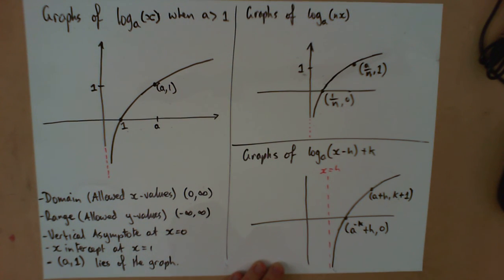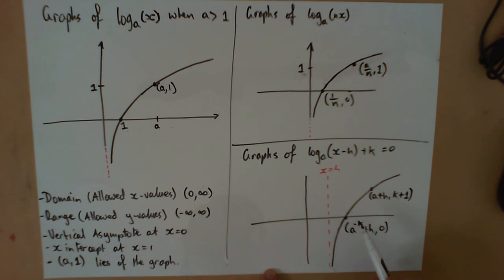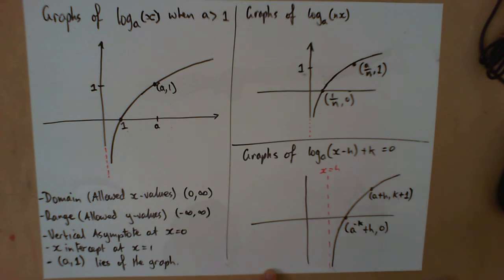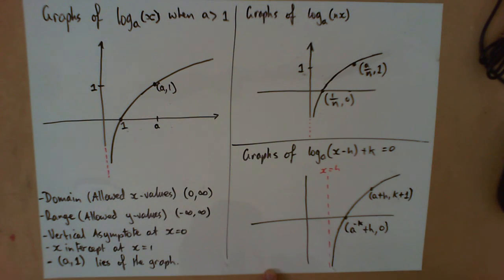The x-intercept is not quite as simple, but it's still doable. We find it by solving the equation equal to zero, which gives us x equals a to the power of negative k, plus h. If there's no k value, just set k equal to zero — a to the power of zero is one — so we just move the x-intercept across by h. It all works out quite nicely.